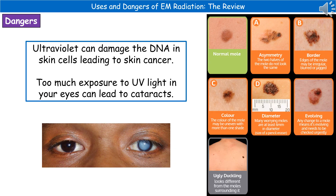While EM radiation can be useful, there are also some dangers to be aware of. Ultraviolet can damage the DNA in our skin cells, which can lead to skin cancer — which is why you should always apply sun cream. If your eyes are exposed to too much UV light, that can lead to developing cataracts, where your cornea becomes very cloudy and misty. You can avoid that by wearing sunglasses with proper UV protection when out in bright sunshine.